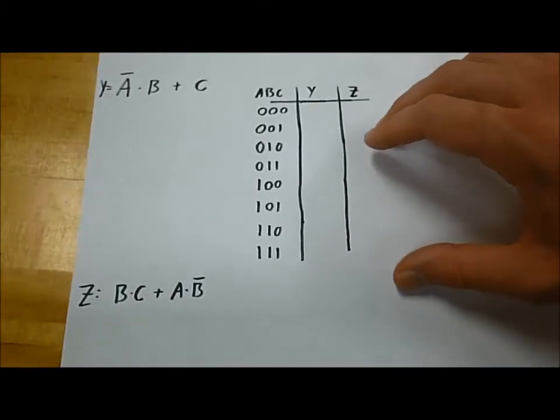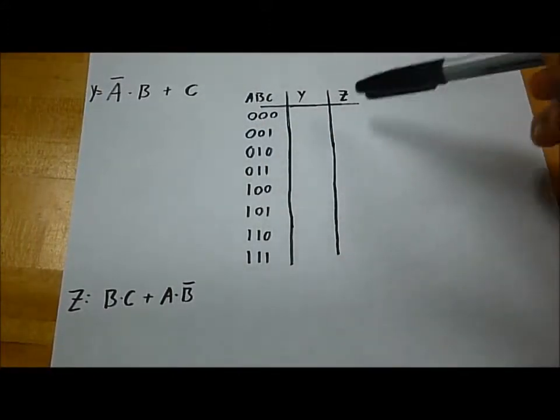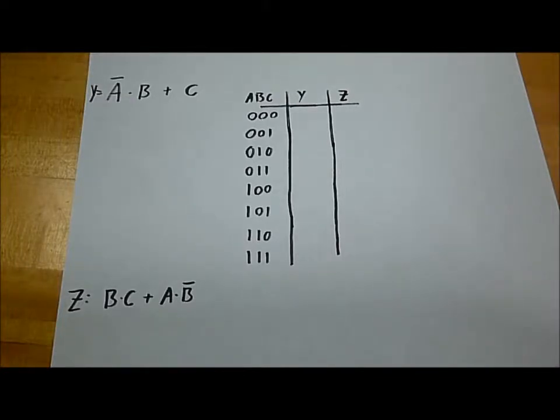Let's look at an example of a logic equation and try to apply what we've learned. On the top, we have the logic equation for Y, and on the bottom, we have the logic equation for Z. I've already made a table, so let's fill out the answers for Y and Z according to these equations.